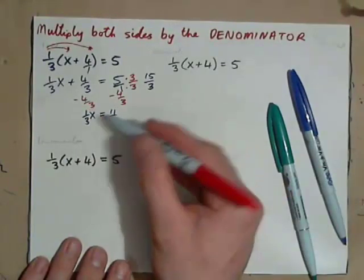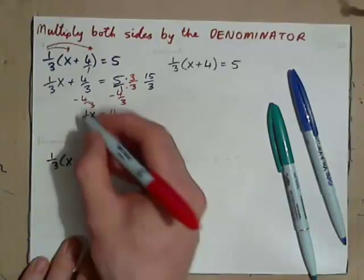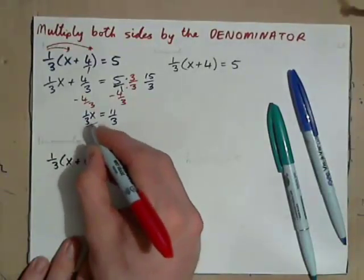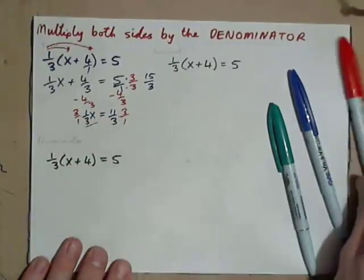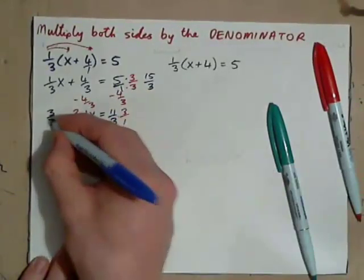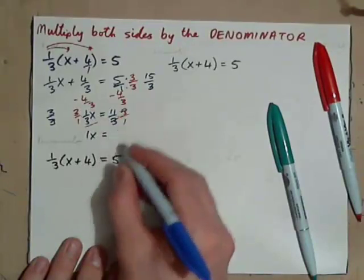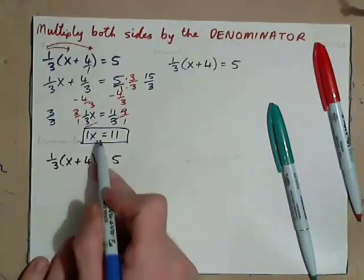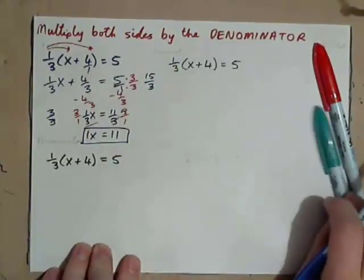Now we've got to get x by itself and we've already practiced these where the best thing to do in this case is instead of dividing by a third, multiply by 3/1 on both sides. And now we have 3/3 x which of course is 1x. So 1x or x equals and these 3's cross-cancel equals 11 and so that's your answer. So there's nothing wrong with this method. That is actually the answer, but you're dealing with fractions.